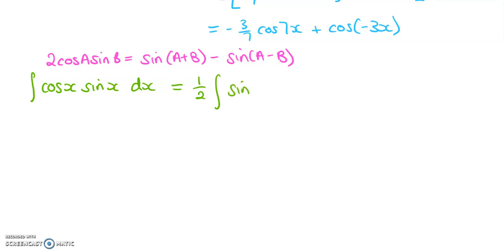So sine a plus b, so the a is x, and b is also an x, so that's sine of 2x, plus, oh sorry, minus sine of a minus b, so that's x minus x, which is 0. Now sine of 0 is equal to 0, so this is simply the integral of sine 2x. And if we integrate sine, we get negative cos, and we need to divide by 2 because of that 2 there, so it's a negative half cos 2x. So we get negative a quarter cos 2x.